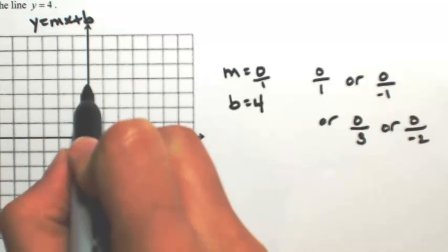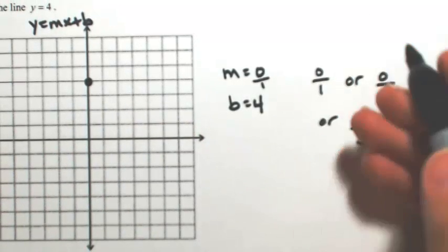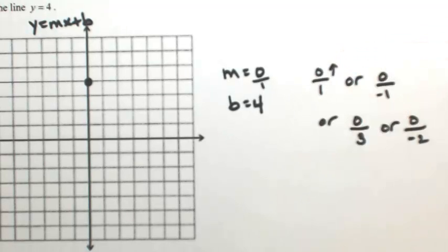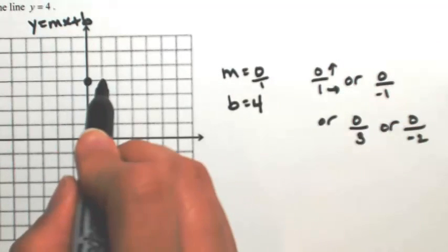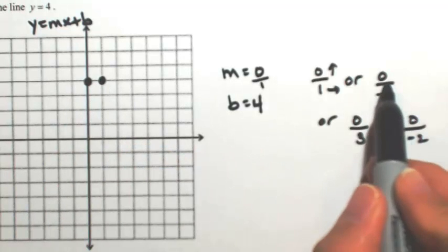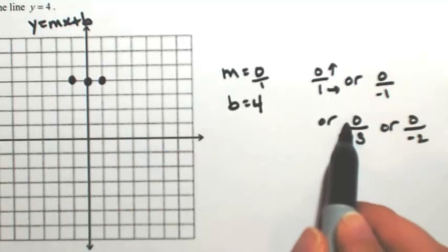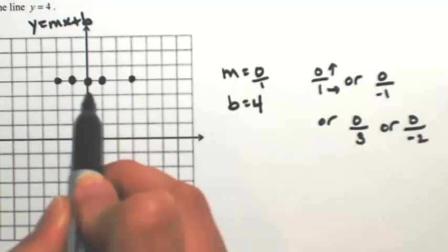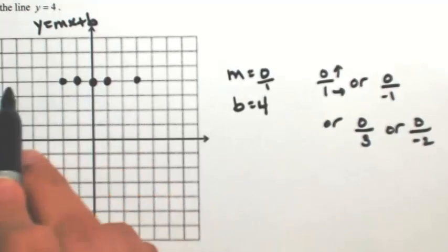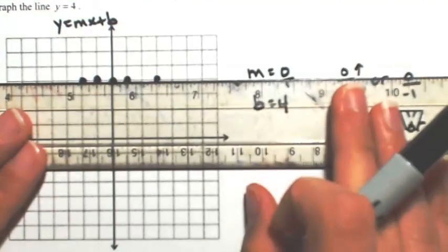From the y-intercept of four, the top is y. I'm going to go up nothing, and then it'd be like right one. So up nothing, right one. Up nothing, left one. Up nothing, right three, left two. So you're never going up or down, so you're always going to move to the left or to the right. So this is just going to be a horizontal line.